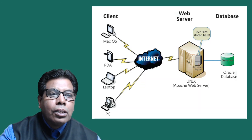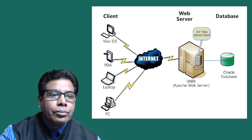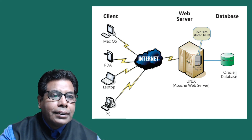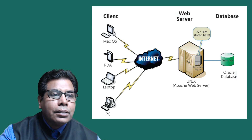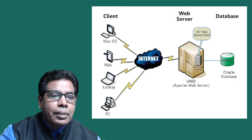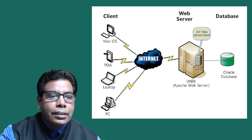As per the need, websites are created. Now let us see the diagram. Here we have the web server, which is an Apache web server, connected to the internet. The clients are connected here: the first client is Mac OS (Apple computer), then we have a PDA (personal digital assistant), then a laptop, and a personal computer.